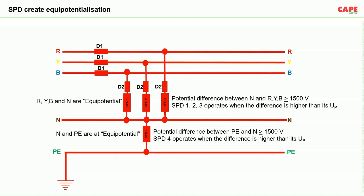This whole sequence must happen in a very short duration — a few nanoseconds — because a normal switching surge lasts around 28 microseconds. We need a device that reacts faster than 28 microseconds, hence we use an SPD, which has a response time of a few nanoseconds — the best response time is 1 nanosecond, and it can be up to 25 nanoseconds.